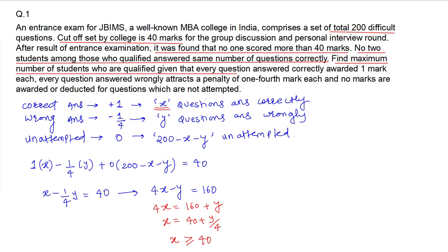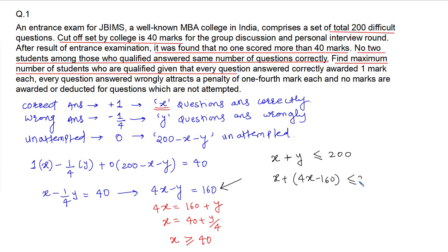What else can we conclude? The number of questions answered correctly is x and incorrectly is y, so x plus y must be less than or equal to 200, since there are only 200 total questions. To find the range for x, replace y with 4x minus 160. This gives x plus (4x minus 160) less than or equal to 200, so 5x is less than or equal to 360, meaning x is less than or equal to 72.